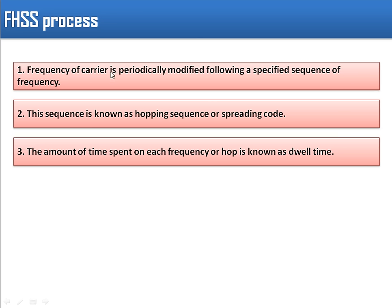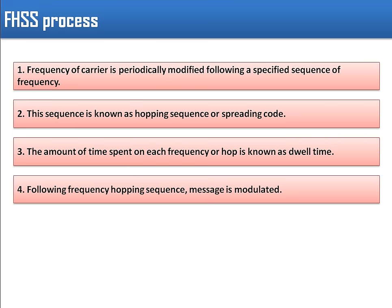The frequency of the carrier is periodically modified following a specified sequence of frequencies. That sequence is known as the pairing code, and the amount of time spent on each frequency, or hop, is known as the dwell time — which we have also seen referred to as hopping time.